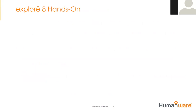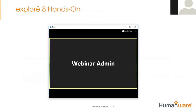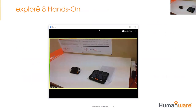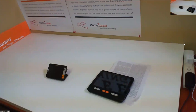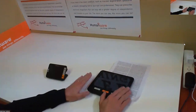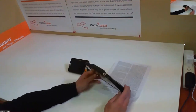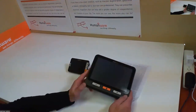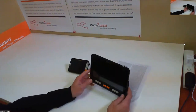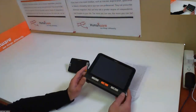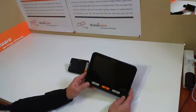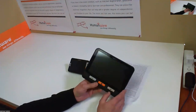I'm going to switch to my webcam and we'll do a hands-on of the Explorer 8. There we go. So we have our two devices, the Explorer 8 and the Explorer 5. I'm going to run through the Explorer 8 first and then we'll see the Explorer 5. As you can see, the Explorer 8 is an 8-inch touchscreen.